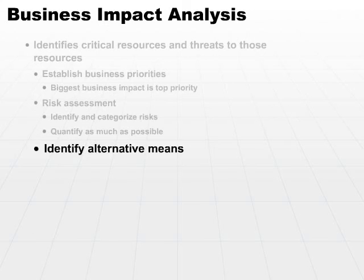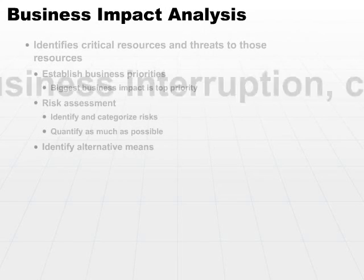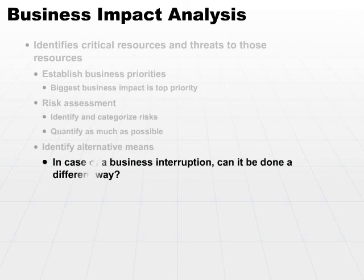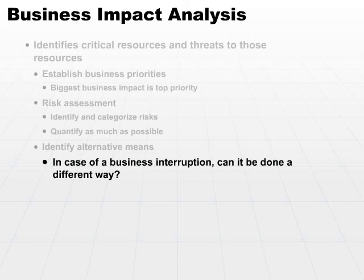Then look at alternative means. This is where you have to step back and think out of the box. In case of a business interruption, can you do it a different way? It may be very possible, depending on your business, that if you have a major failure of electrical power, you can still do your business using pen and paper. Ask yourself that question — you might be surprised by the answer.